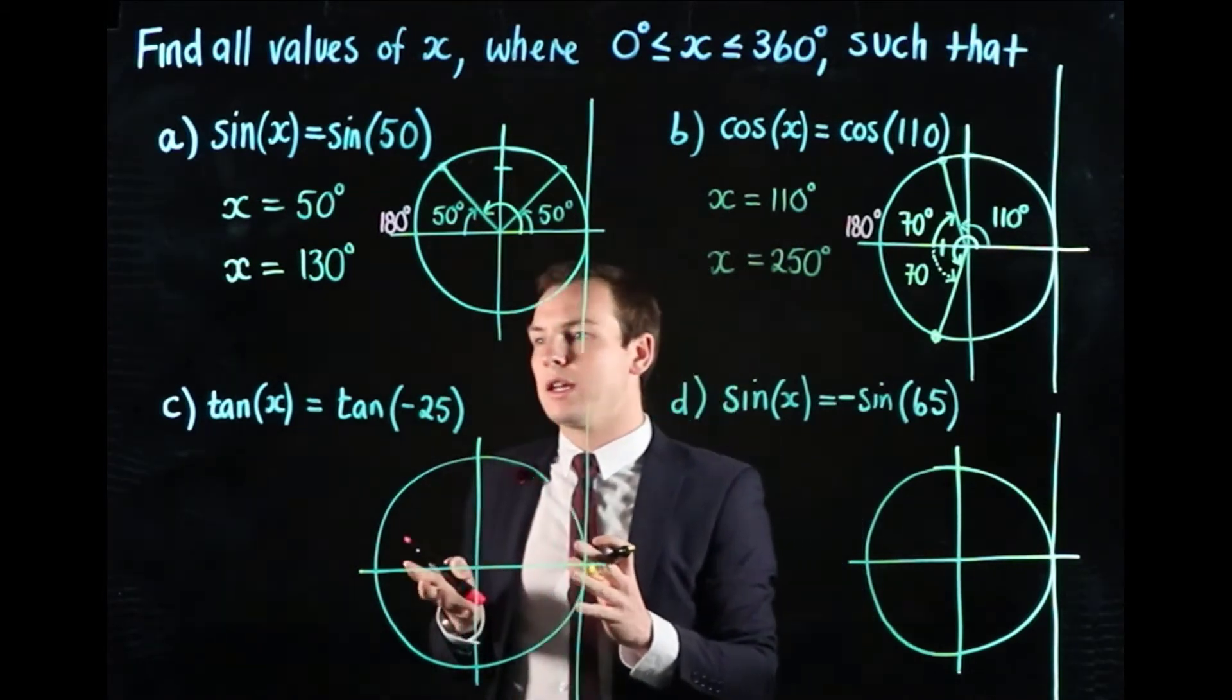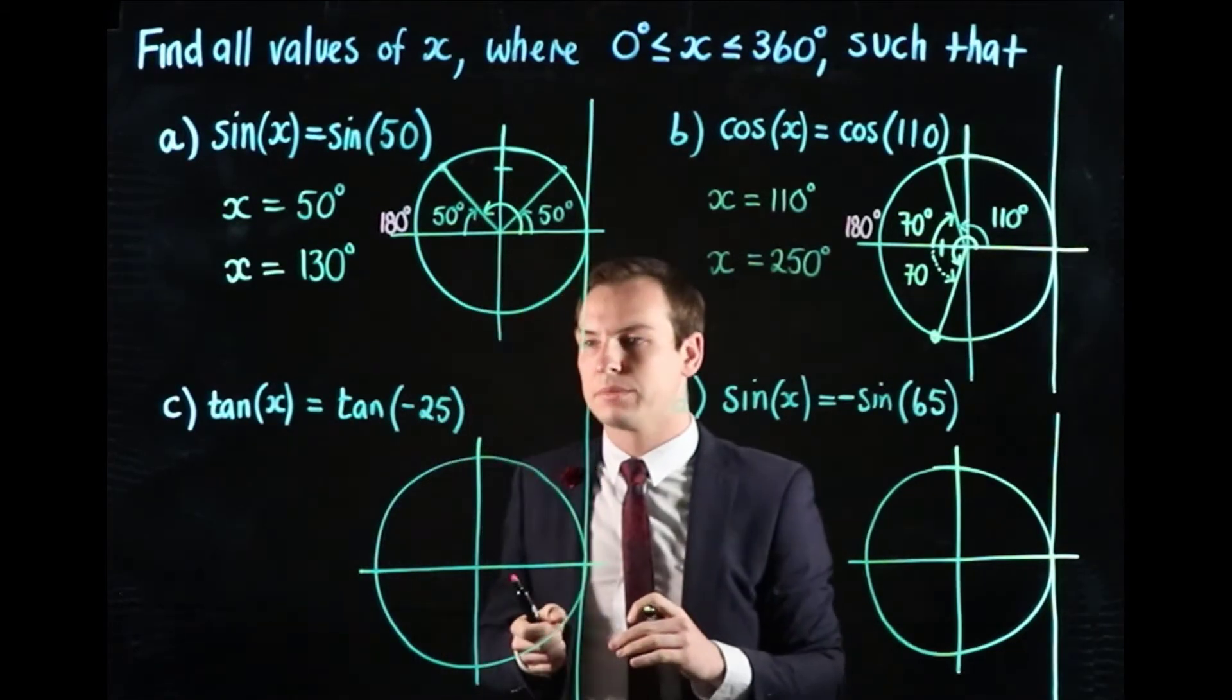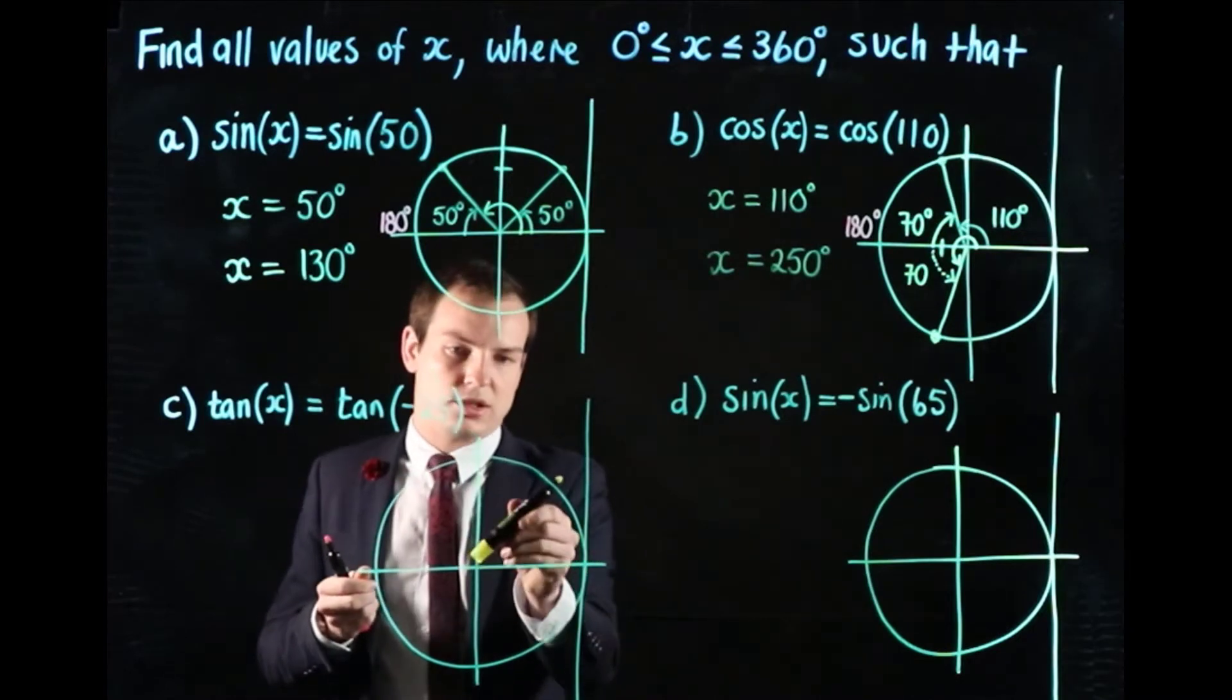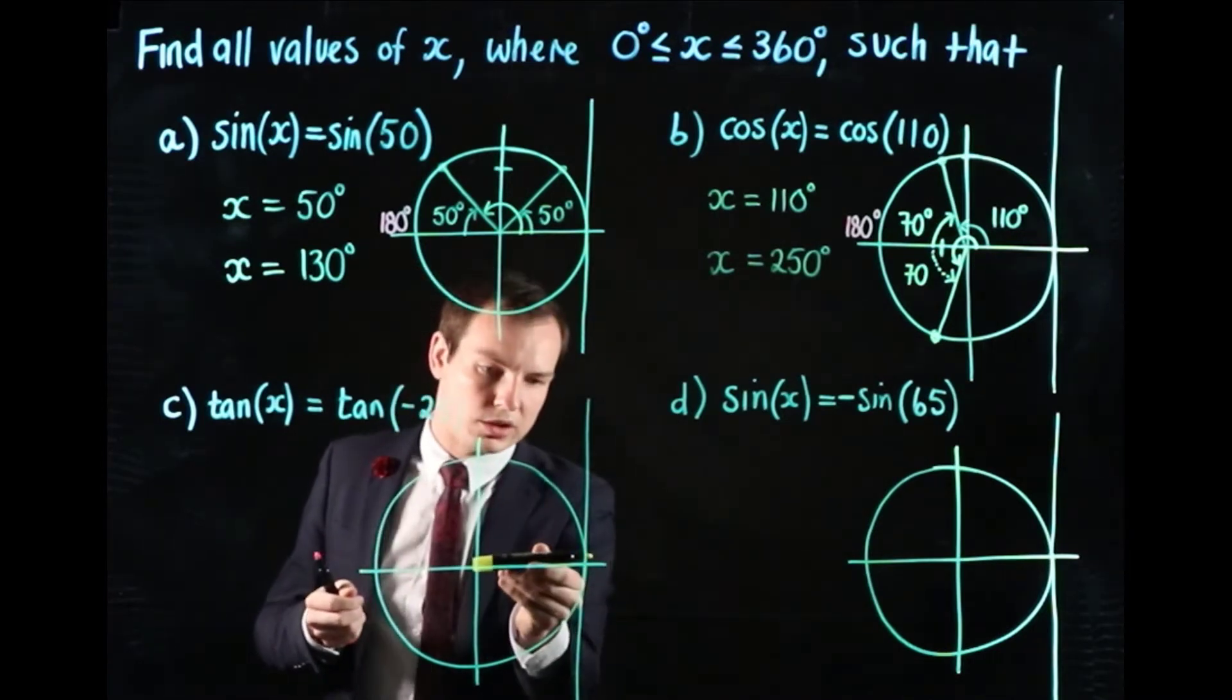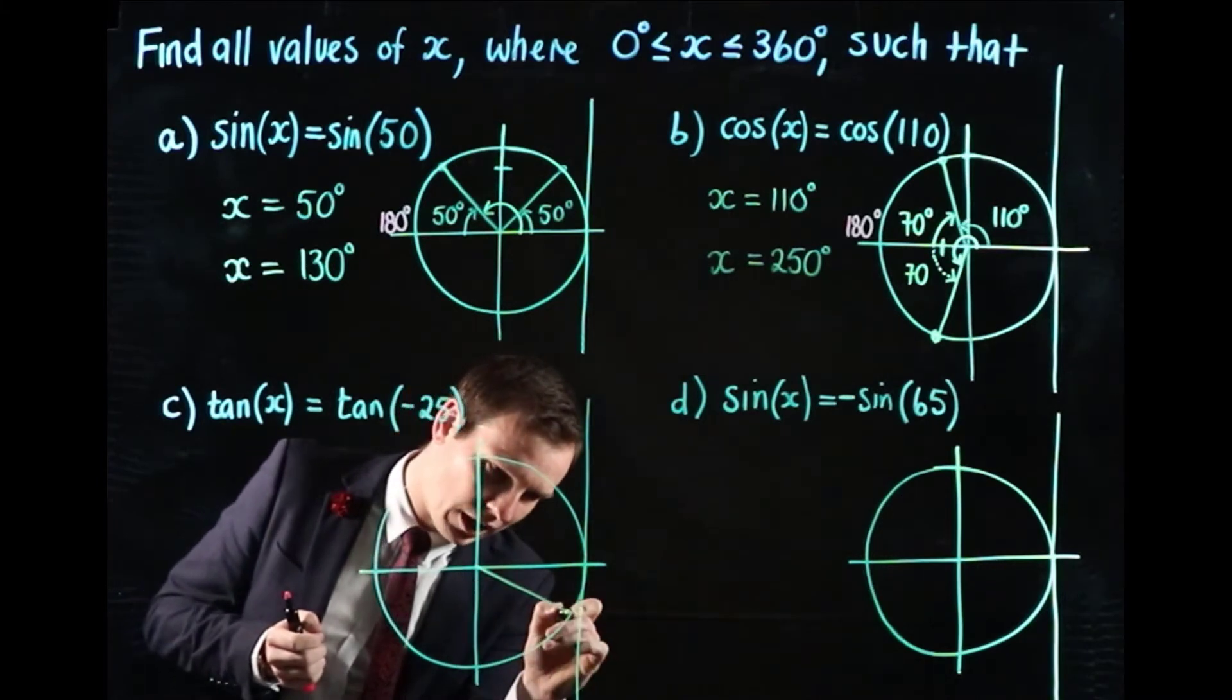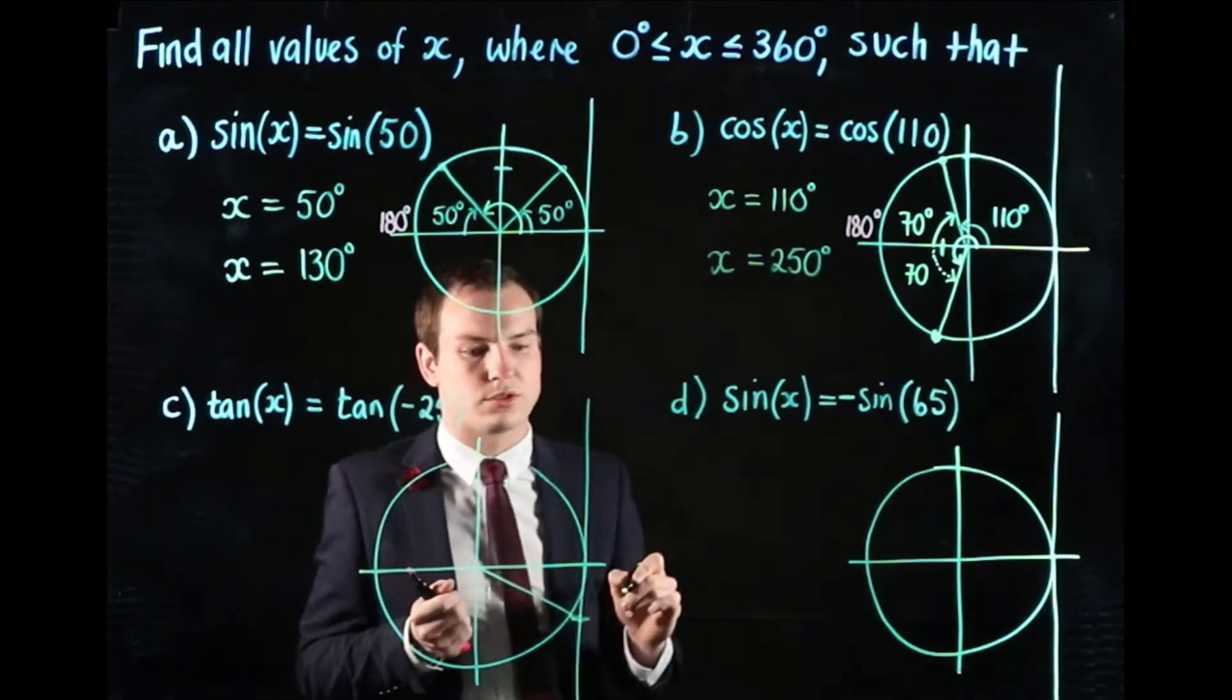For part c, we've got a relationship involving tan. We want tan(x) to equal tan of negative 25. We've got our unit circle and now we need to find where negative 25 degrees is. Our angles are usually measured anti-clockwise from the x-axis, but with a negative angle, we're going to go clockwise by 25 degrees. We extend it until it hits our tangent line, and it's this value here that we're interested in.